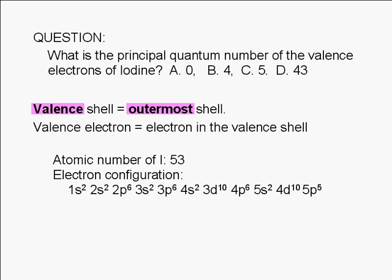The valence shell, or outermost shell, is the shell with the largest N. Therefore, the valence shell of iodine is the fifth shell. It has seven valence electrons, two in the 5s subshell and five in the 5p subshell.